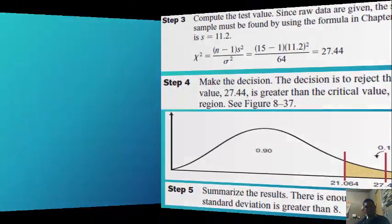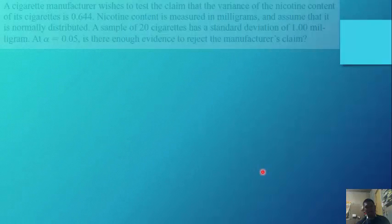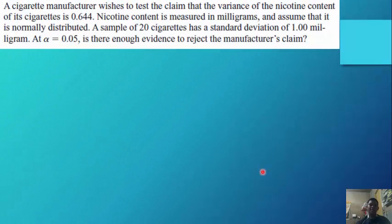Summary: there is enough evidence to support the claim that the standard deviation is greater than 8. Another example — a cigarette manufacturer wishes to test the claim that the variance of the nicotine content of its cigarettes is 0.644. Nicotine content is measured in milligrams and is assumed to be normally distributed.